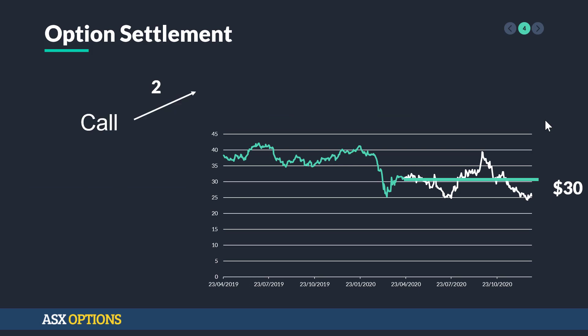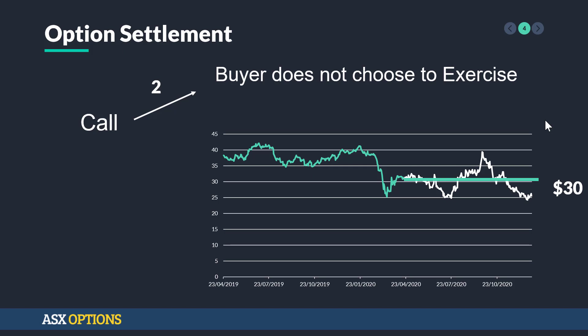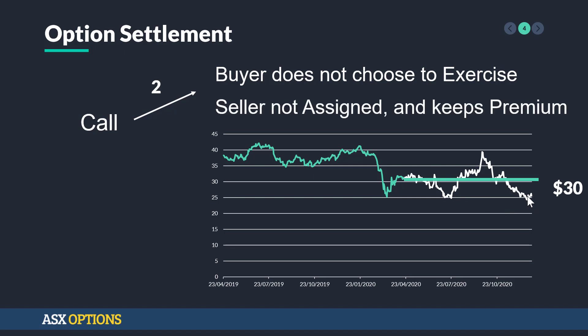Another scenario is that the buyer does not choose to exercise, because now we have a call option with a strike at $30 and the price has gone below. So why buy for $30 when you can go into the market and buy for less than that? In this case, the seller is not assigned and keeps the premium.